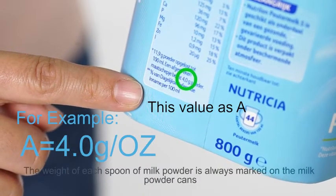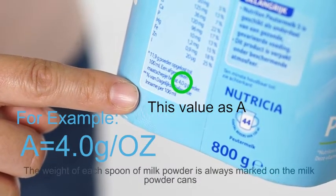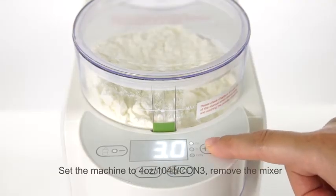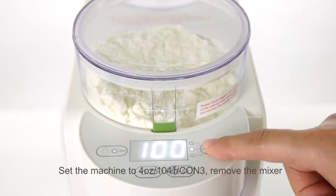The weight of each spoon of milk powder is always marked on the milk powder cans. This parameter is referred to as A. Set the machine to 4 ounces, 104 degree Fahrenheit, con 3.